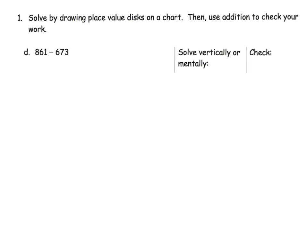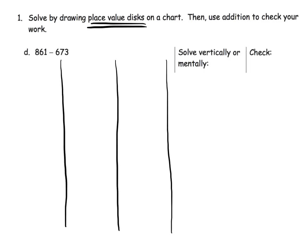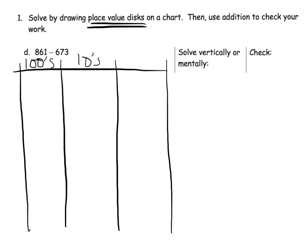Teachers and parents, I'm going to go through this one a bit more quickly as it's a second example of the same kind of thing we've been doing. We're going to start with the place value method. I'll begin by drawing the place value chart with hundreds, tens, and ones. Now let's model 861: eight in the hundreds column, six in the tens column, and one in the ones column.